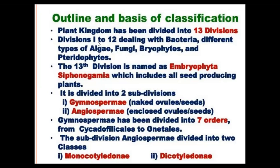From divisions 1 to 12, they cannot produce the pollen tube during fertilization. Pollen tube is absent during fertilization in divisions 1 to 12. So these divisions 1 to 12 are called Asiphonogamma.